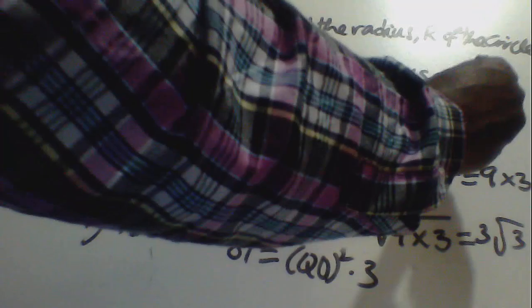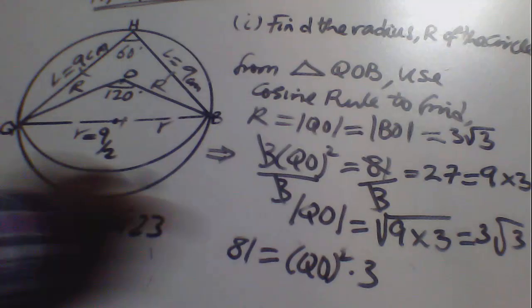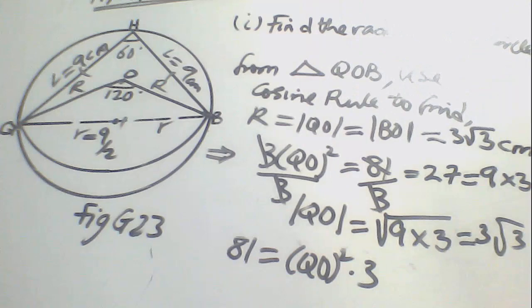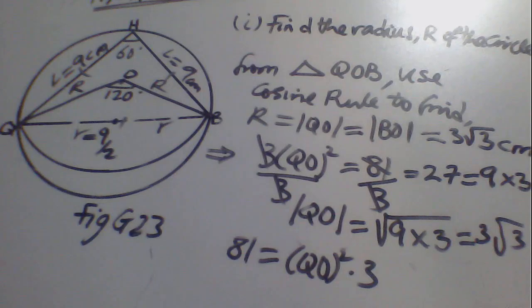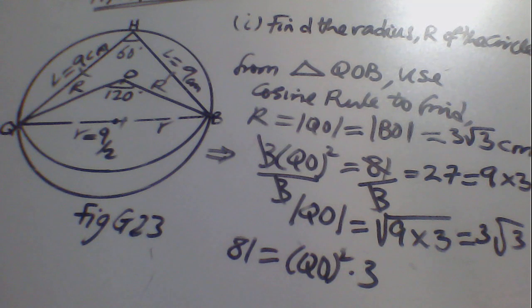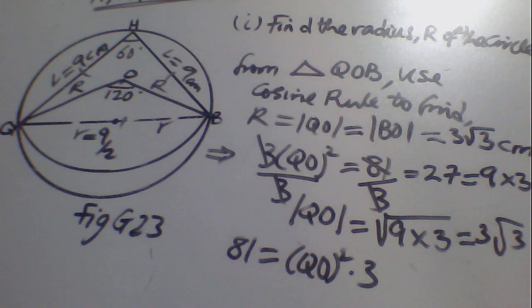Therefore QO equals BO equals R equals 3√3 cm. This is the radius of the circumscribed circle, answering the first question. Now for the second question: find the area of the circle not enclosed by the cone.